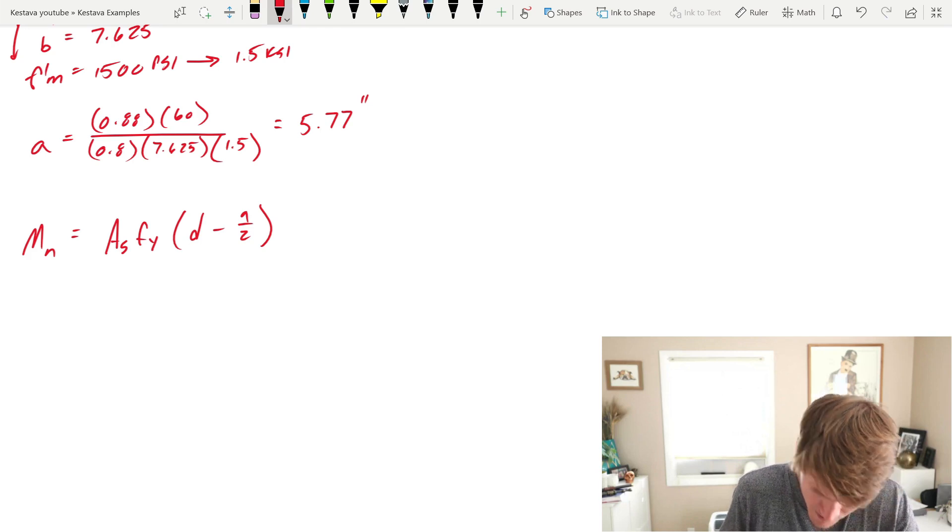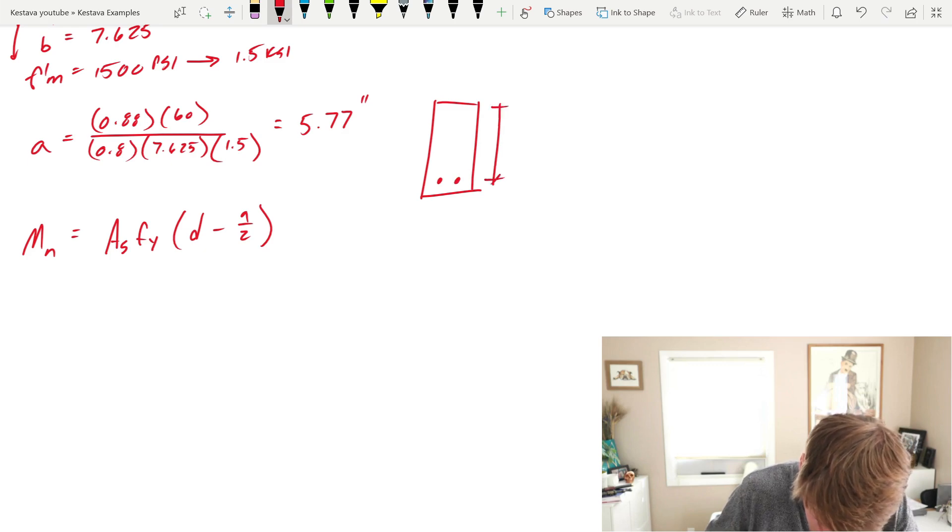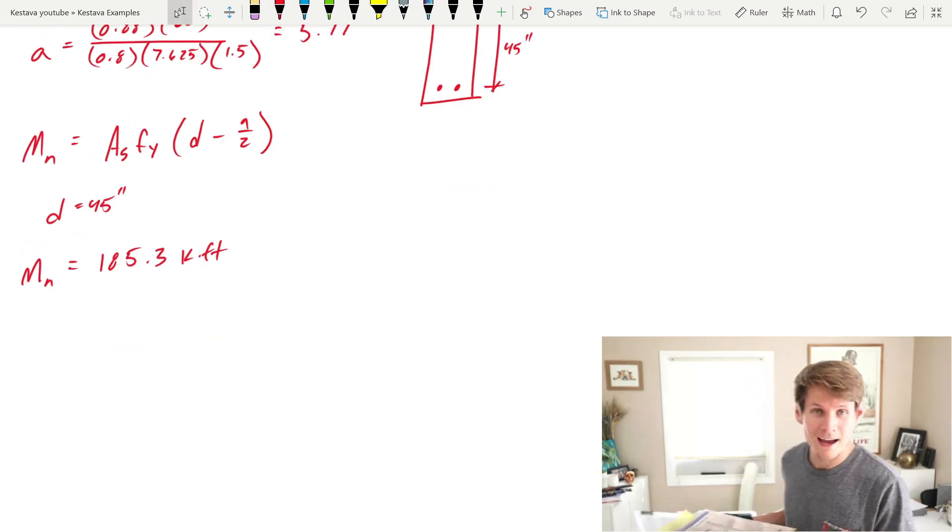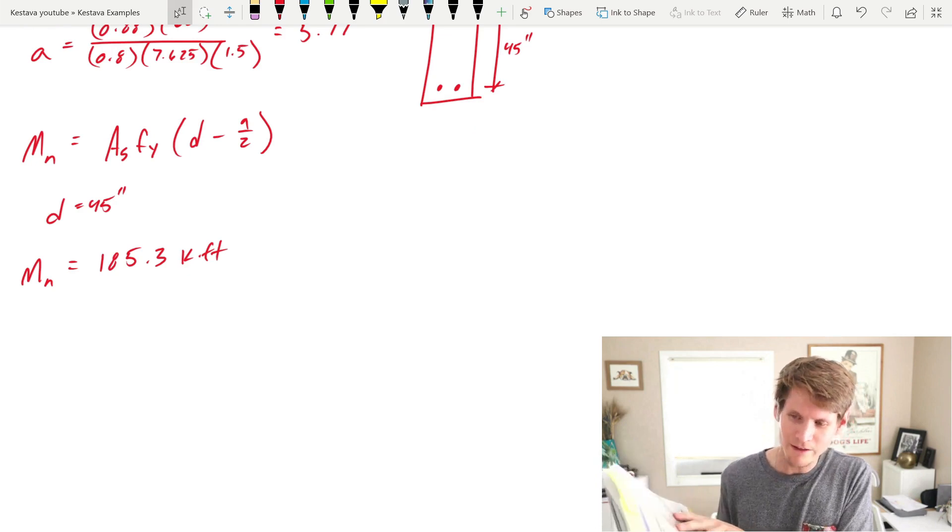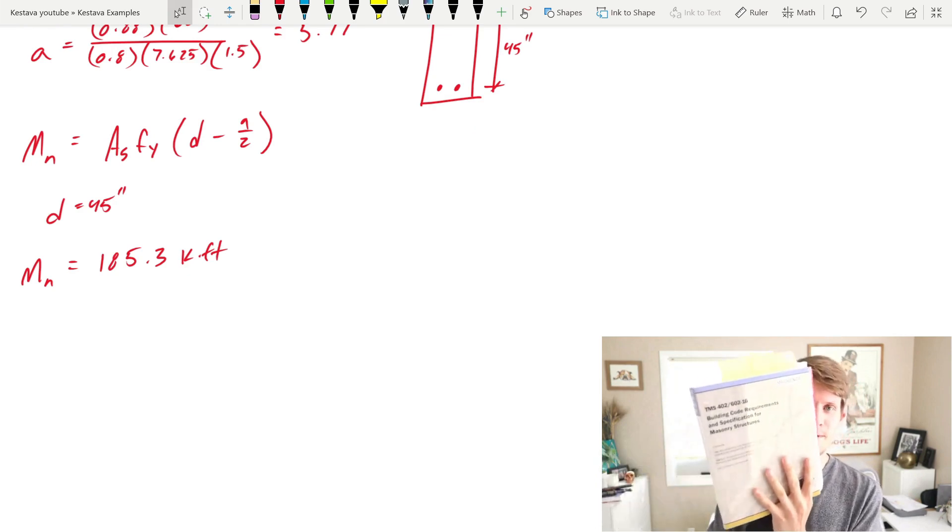Let's keep going. D, this is the effective depth down to our flexural rebar, which was up above, but I'll just draw it here. 45 inches, full depth of 48 inches. So D, that was easy. AS times FY we have from above. A, we solved. So let's plug all that in. MN equals 185.3 kip-feet.